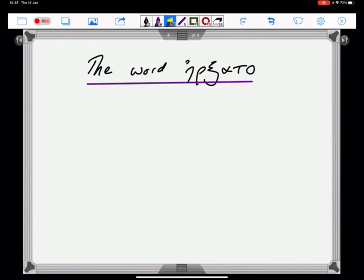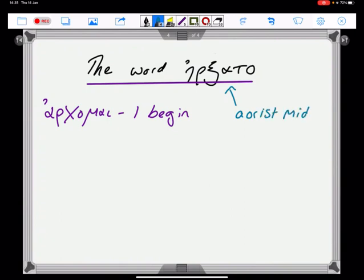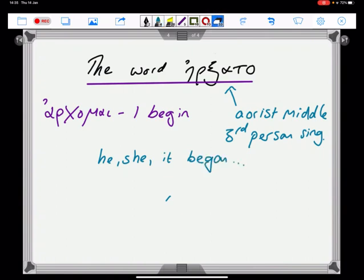In this chapter, you're also introduced to the word ἤρξατο. This is the aorist of the verb ἄρχομαι, meaning I begin. It's an aorist middle, third person singular. It means he, she, it, began.